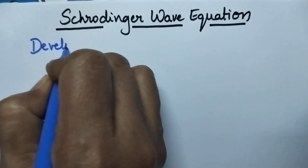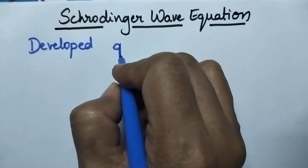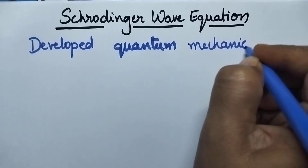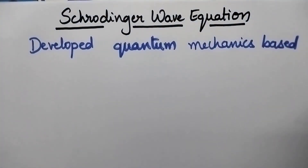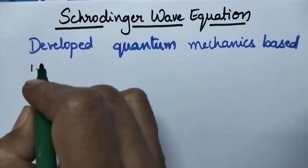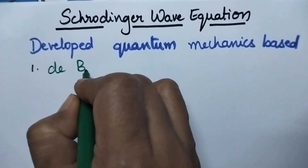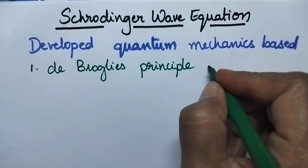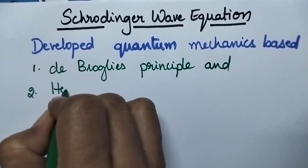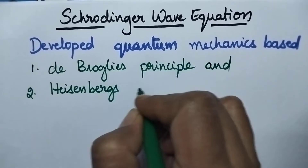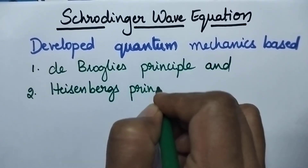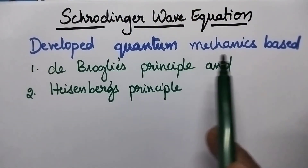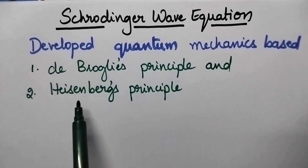Schrödinger developed quantum mechanics based on two fundamental principles, and they are de Broglie's principle and Heisenberg's principle. So, Schrödinger developed quantum mechanics totally based on de Broglie's principle and Heisenberg's principle.